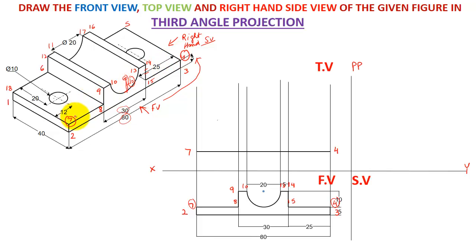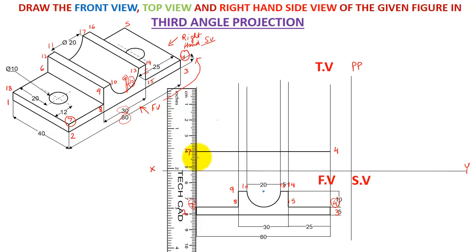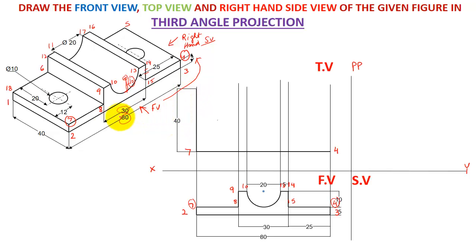When you see from the top: 4 to 14 is a complete line, 14 to 13 is a complete line, 13 to 10 is the semicircle from the front view but from the top it gives a complete single line, 10 to 9 is a line, and 9 to 7 is again a line — so this is the 4-to-7 line. Then I take a scale and make a 40 mm line, giving me the 7-to-18 point. From 18, I make a line to point 5 and complete the 4-to-5 vertical line.